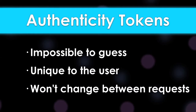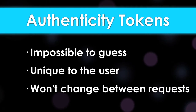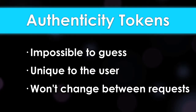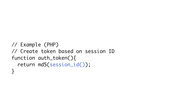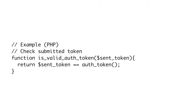When we generate our authenticity token, we want to ensure three things: it is impossible for the attacker to predict; it is unique to the user; and it will not change from one request to another for a given user. A common approach is to hash a piece of information unique to the user and not easily discovered by the attacker. For instance, a session ID is ideal since it's already pretty random and it's concealed from the outside world. You could also salt this hash with some secret string to make it more difficult to spoof. When you check the authenticity token, you just need to check that the token sent is the same as the one you can calculate yourself. Now that an attacker cannot figure out a valid authenticity token, he cannot trick another browser into making a request by crafting his own form.